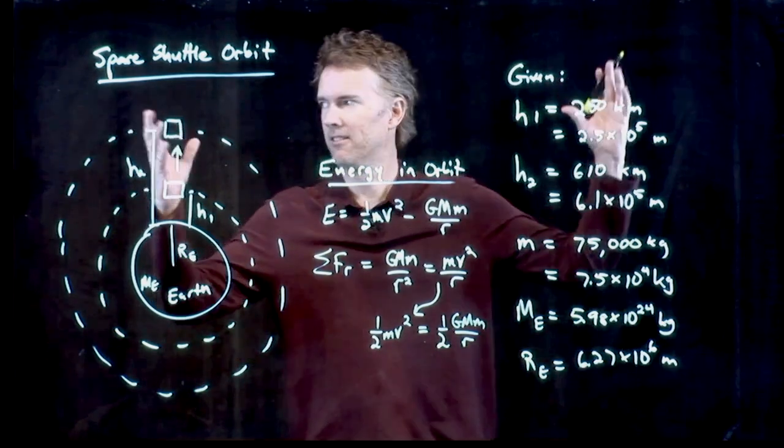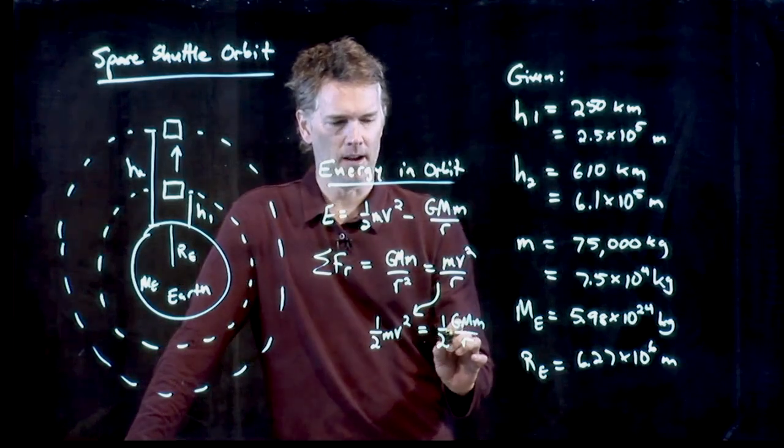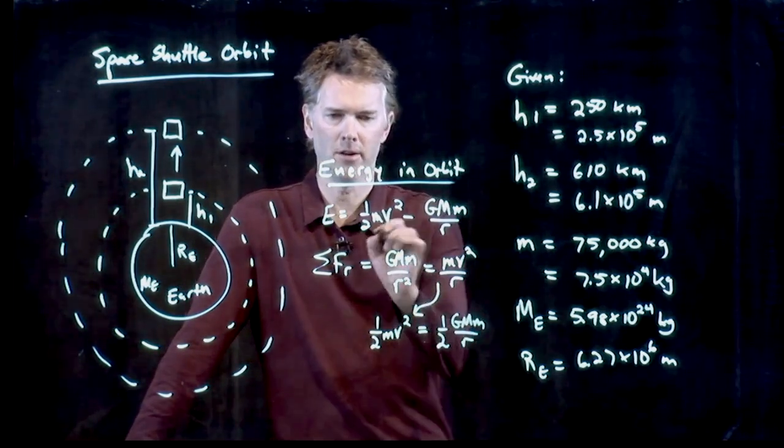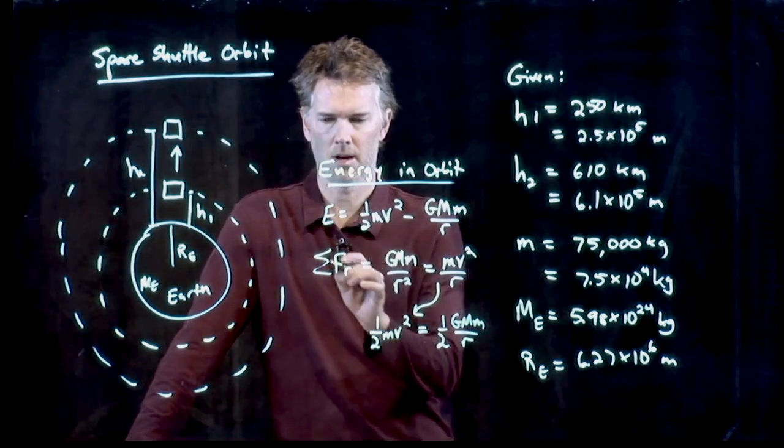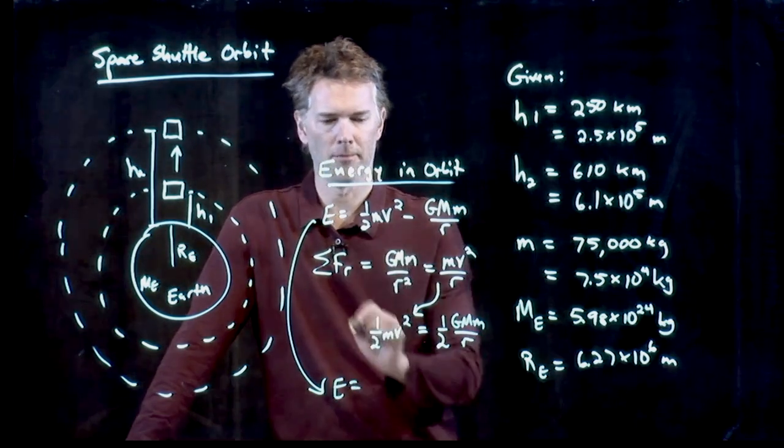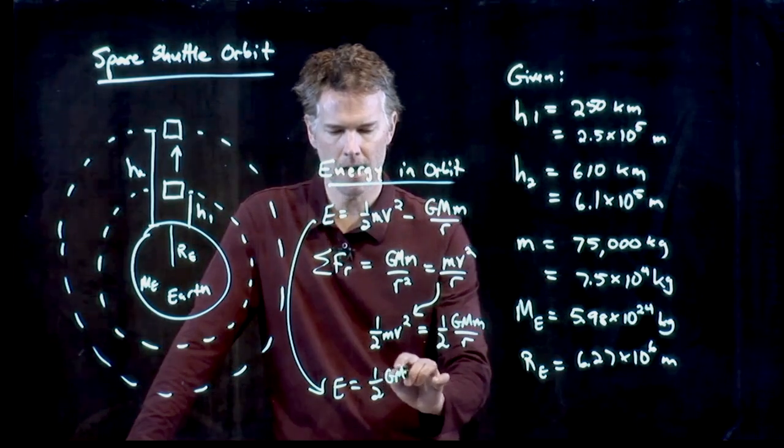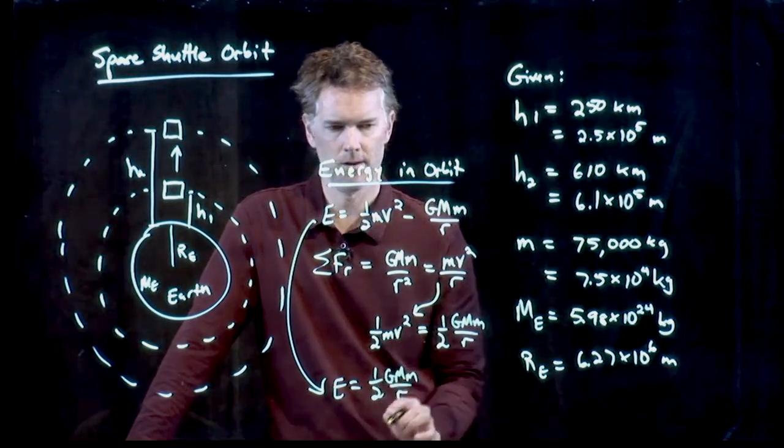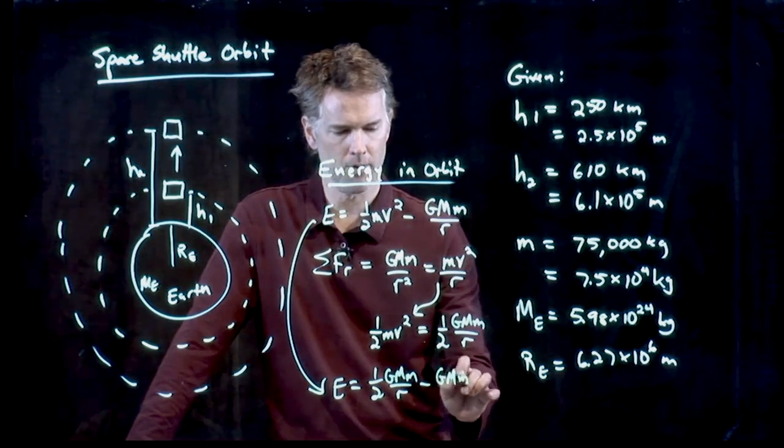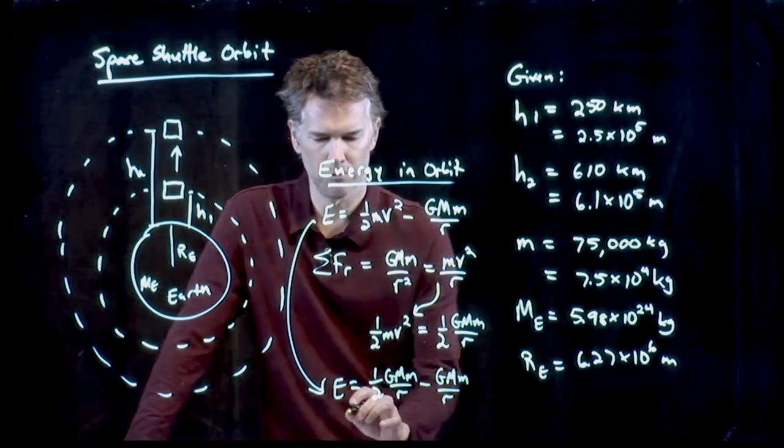And I saw the light. All right. That means that we can plug this in to our energy equation. And so what does this energy equation become? Well, it's one-half mv squared, which is now this. One-half GMm over r. And we're still subtracting GMm over r.